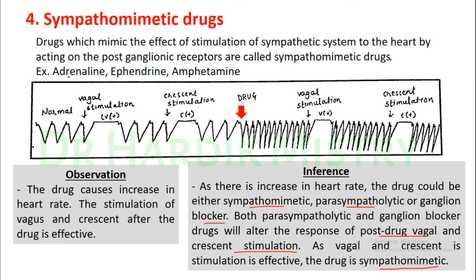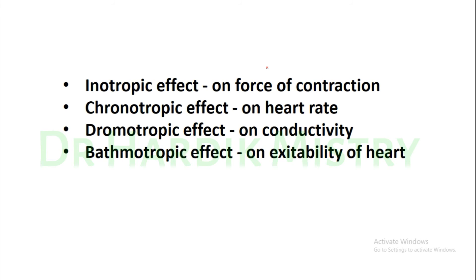There are four types of cardiac effects: inotropic effect means effect on the force of contraction; chronotropic effect means effect on heart rate; dromotropic effect means effect on conductivity; and bathotropic effect means effect on the excitability of the heart.